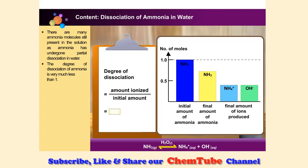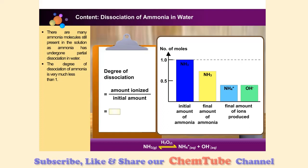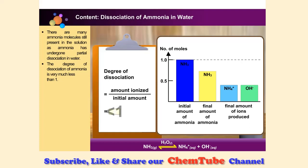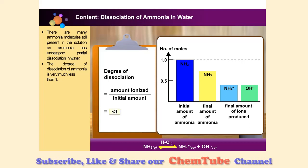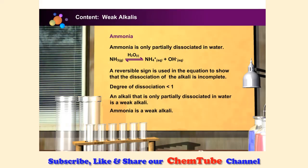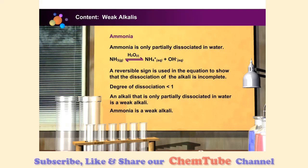There are still many molecules left, as ammonia has undergone only partial dissociation. The degree of dissociation of ammonia is very much less than 1. Thus, ammonia is a weak alkali. An alkali that only partially dissociates in water is a weak alkali. Ammonia is, therefore, a weak alkali.